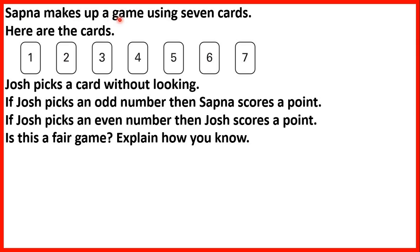Sapna makes up a game using 7 cards. Here are the cards. Josh picks a card without looking. If Josh picks an odd number, then Sapna scores a point. If Josh picks an even number, then Josh scores a point. Is this a fair game?